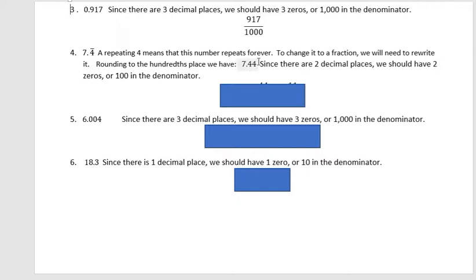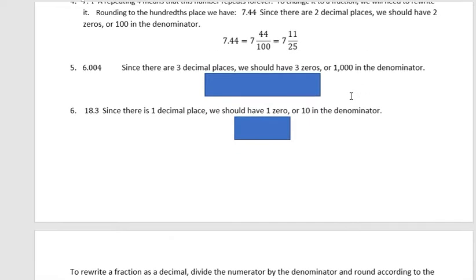Now remember the third number out would also be a four. That's why the second number doesn't go up to five, because it's followed by a four. We would round that to four. Now in our new number 7.44, we have two decimal places, which again leads us to two zeros. And reducing by dividing the top and the bottom by four gives us seven and eleven twenty-fifths.